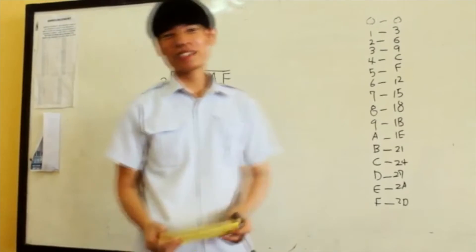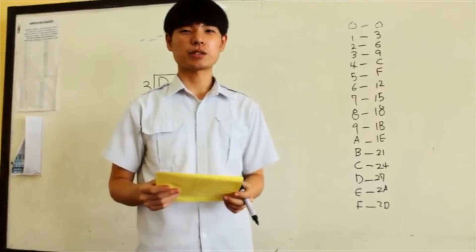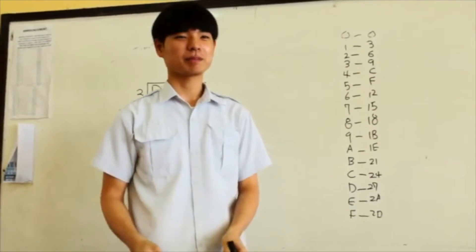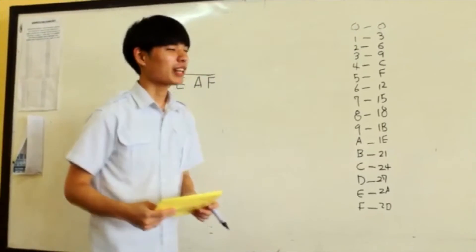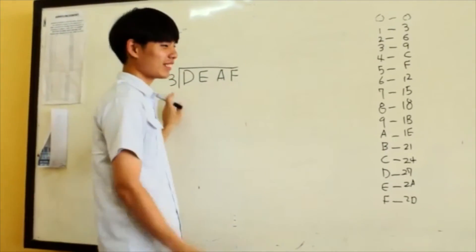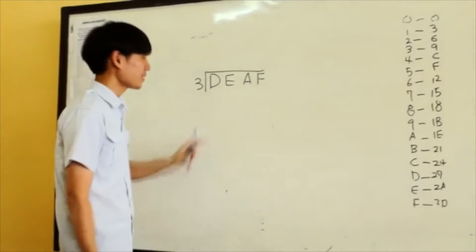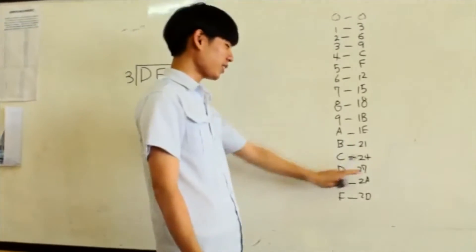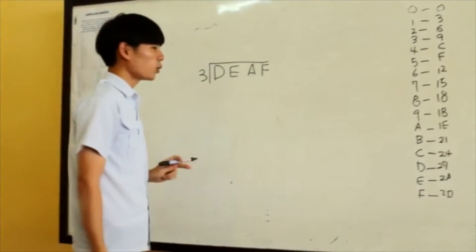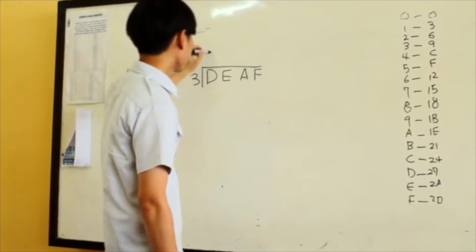Good morning. Today I will be showing how to divide hexadecimal numbers. Our problem is dividing a number by 53. We have D27, and D27 times 3 gives 0 as remainder. Our E is 28.